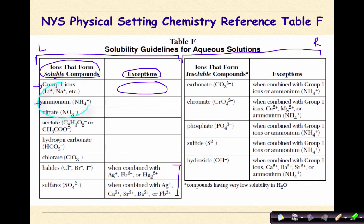If your compound has ammonium (NH4+1) in it, it will also be soluble in water, with no exceptions. That ion is also listed on table E. Next, nitrate (NO3-1): any compound that has nitrate in it will dissolve in water, with no exceptions. This continues with acetate — both the inorganic and organic forms — hydrogen carbonate, and chlorate. Any of these ions, if found in an ionic compound, it's going to be soluble in water and will not form a solid or precipitate out.